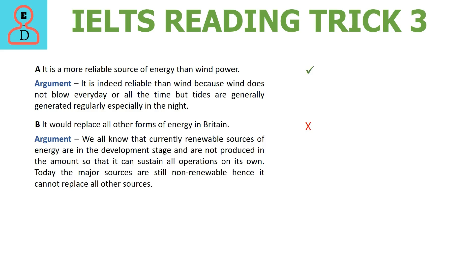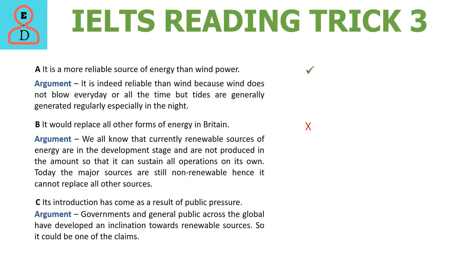Option C says that its adoption has come because of public pressure. It is a well-known fact that not only the public, but even governments are now favouring renewable sources of energy including tidal power. Hence it could be true that the passage mentions public in Britain pressuring the government to develop tidal power. But we cannot say this for certain — please understand the difference: in the last two options we discussed features of tidal power, but here in option C, public opinion is discussed, about which we cannot say for certain until we read the passage. So for this option we will mark a question mark.